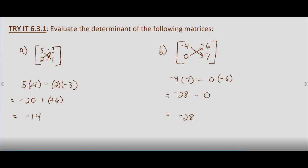So the determinant of our first matrix is negative 14, the determinant of our second matrix is negative 28. We get that by multiplying the first row, first column times the second row, second column, and we take that product and subtract the product of the second row, first column times the first row, second column.